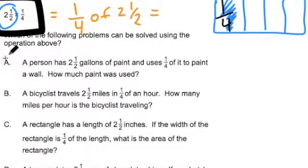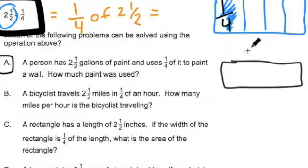So let's start with A. A person has two and a half gallons of paint and uses one fourth of it to paint a wall. How much paint was used? Okay. Well, my whole is the amount of paint they have. Would you agree? This is two and a half. That represents your whole, or 100%.